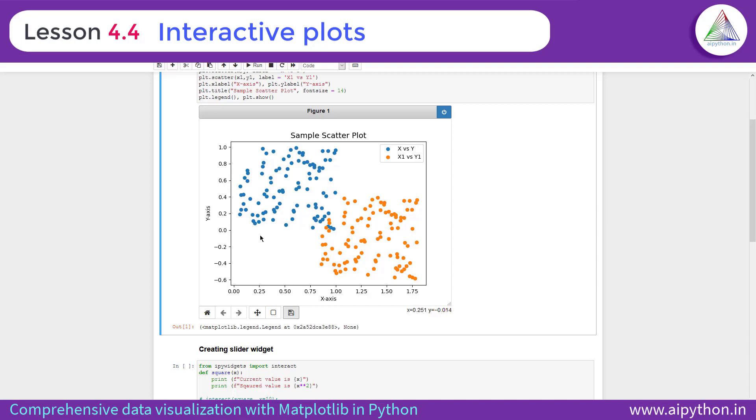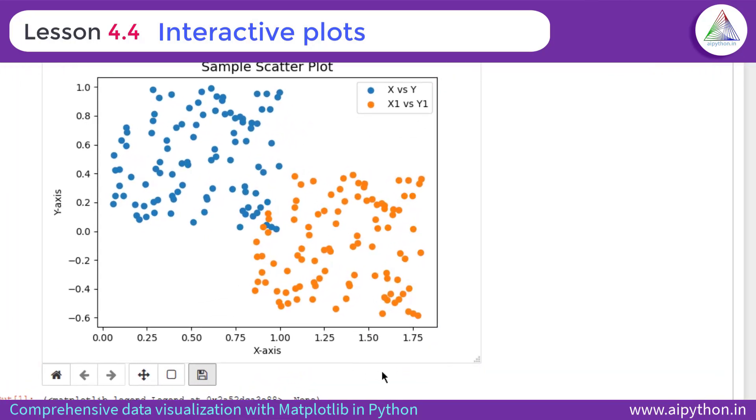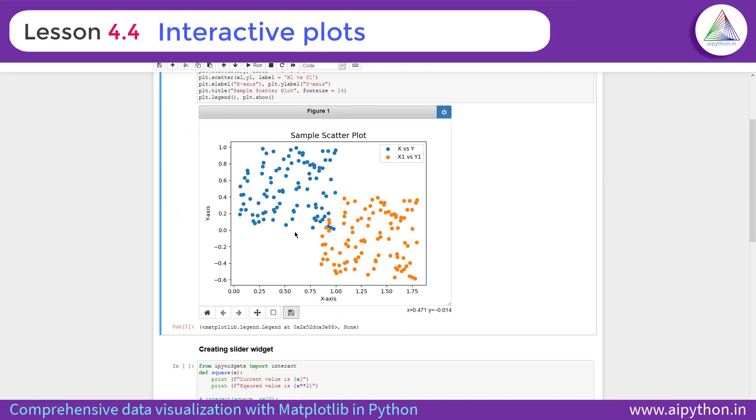As you can see here, when we hover over the mouse, you can see the X and Y coordinates here. The X and Y coordinates are getting changed. As you can see, it moves around X axis and when you move up, it moves along the Y axis. And at any point of time, you get the coordinate of the mouse cursor. This is also a part of interactive feature.